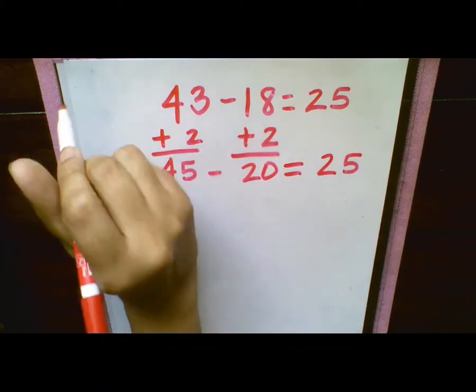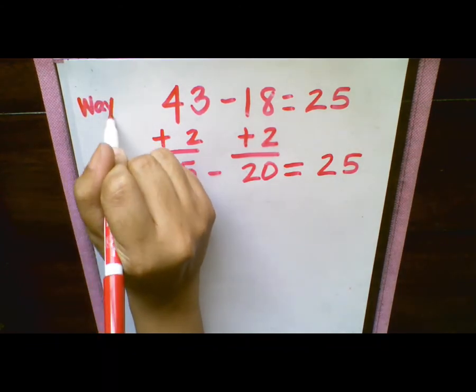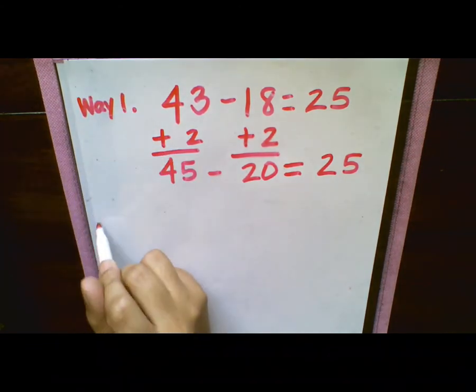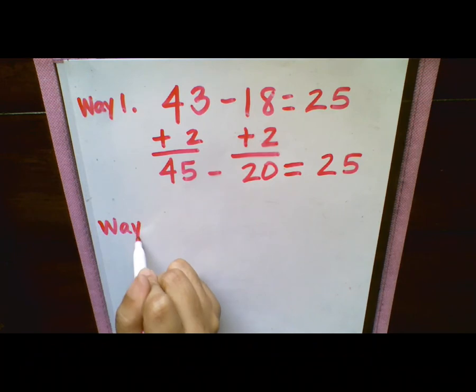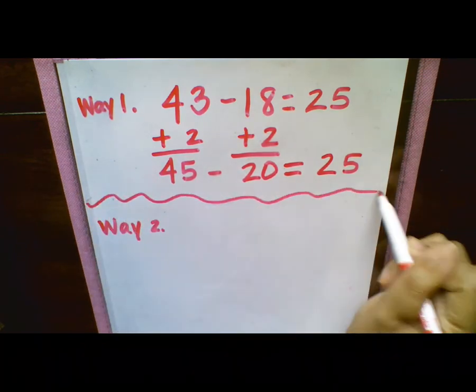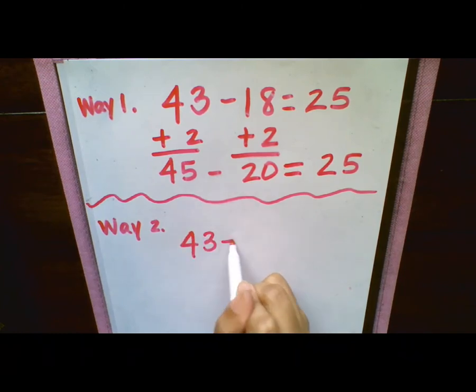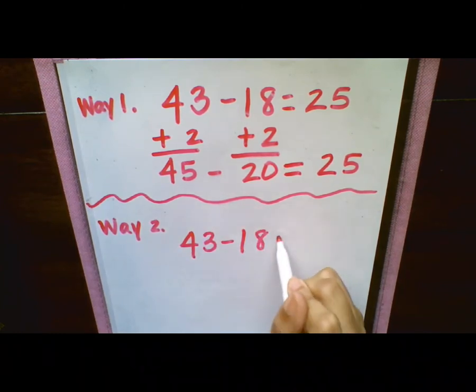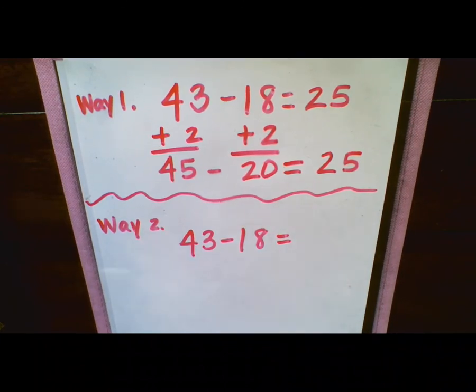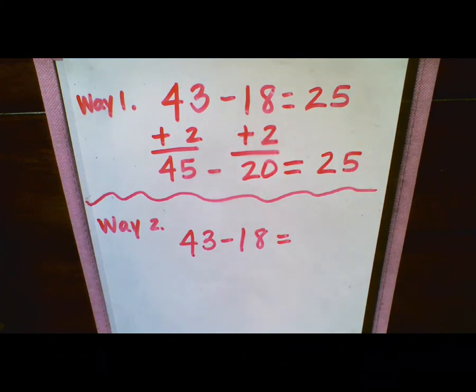I'm going to rewrite this. I'm going to put way 1 and I'm going to show you a different way to do the same problem. So I'm going to put a little line under here. So we're going to rewrite the same problem. 43 minus 18 equals. So before, as we said, we knew that we had to add 2 to this number to make it a 10. Again, we're going to do exactly that same thing. So this part is going to be the same. We're going to add 2 to our 18.